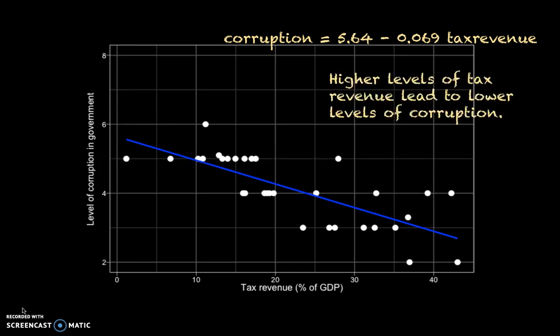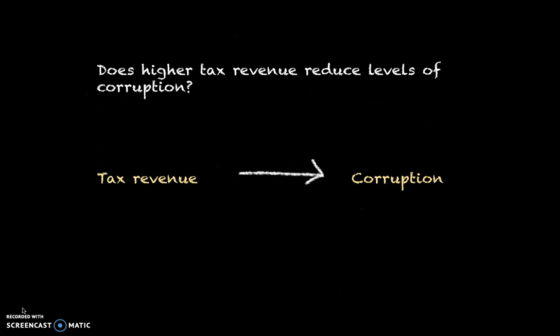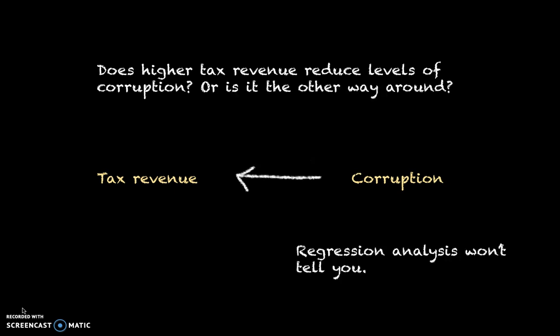So higher levels of tax revenue lead to lower levels of corruption in this data. Perhaps the inclination would be to say that higher tax revenue indeed reduces the level of corruption. There is one problem though: regression does not tell you anything about causal direction. Regression tells you something about correlation. So it could easily be the other way around — corruption leading to less tax revenue. Regression analysis won't tell you which one of the two is true. For that you need a causal argument, a theoretical argument. Perhaps you could look at changes over time: if corruption changes before tax revenue changes, that suggests that corruption is the cause. But that is a much more advanced regression model.